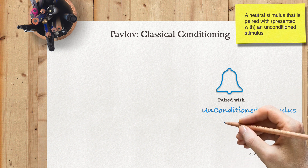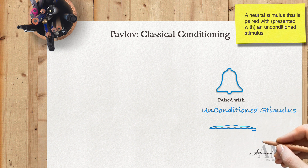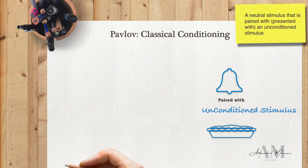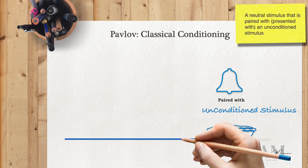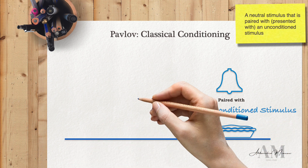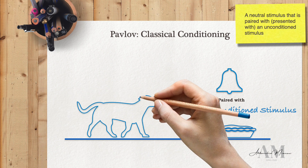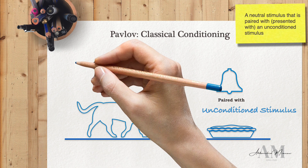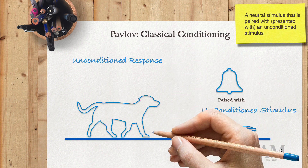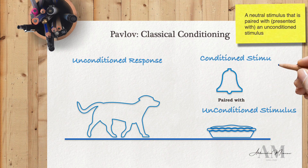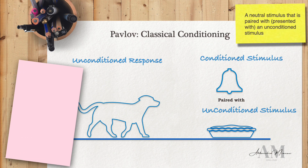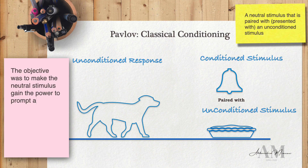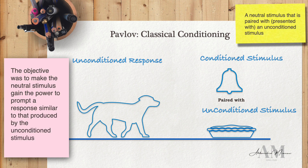When an initially neutral stimulus, such as the ringing of the bell, is paired with an unconditioned stimulus, the neutral stimulus acquires the ability to elicit a response similar to that caused by the unconditioned stimulus. The main point here is to enable the neutral stimulus to evoke a response similar to that produced by the unconditioned stimulus.